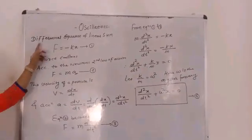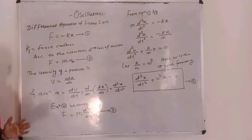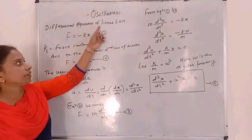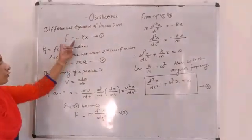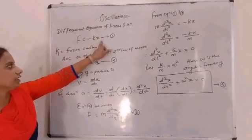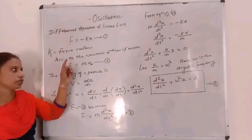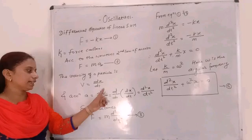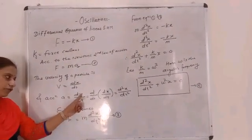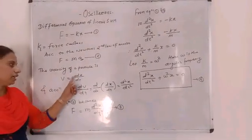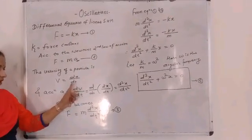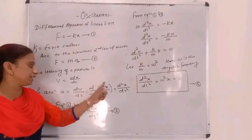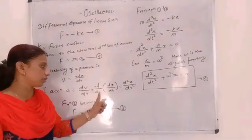I repeat: to obtain the differential equation of linear SHM, we consider a particle performing linear simple harmonic motion. The restoring force is F equals minus K times x — equation 1. According to Newton's second law of motion, F equals mass times acceleration. So we first calculate acceleration, which is the rate of change of velocity with respect to time, and we first calculate velocity as dx/dt.